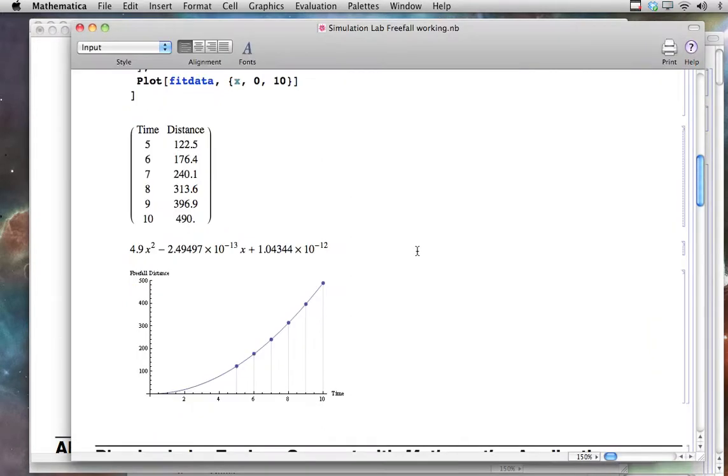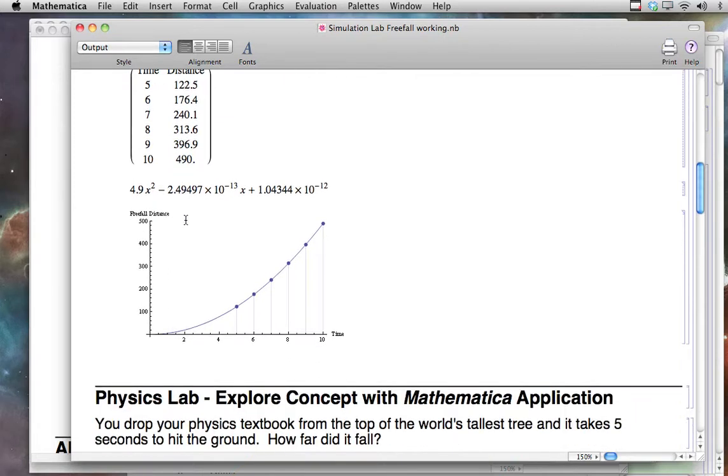Another way we use it is in the lab. We take data, and then we can graph that data easily. The great thing is, if we change some of our data set, we just go back and change one value. The graph automatically updates, and we can do some very interesting and deep science with this.